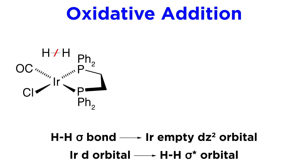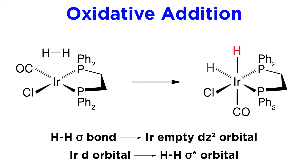Because of this, the molecule will split, and we will get two hydrogens on the iridium center, cis to one another. This also means that one ligand must get pushed to the other axial position, and in this case that will be the carbonyl. We now have an octahedral complex, and the iridium center has an oxidation state that is two greater than it was before.